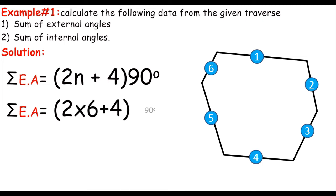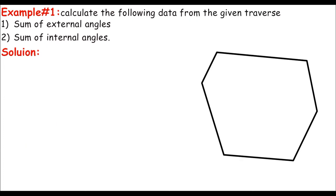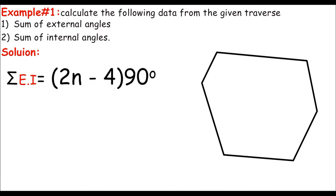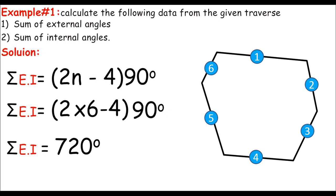So: (2 × 6 + 4) × 90° = 1440°. That is how we calculate the sum of external angles. Now for the sum of internal angles, using (2n − 4) × 90°: (2 × 6 − 4) × 90° = 720°. So the sum of internal angles equals 720 degrees. And that's it.